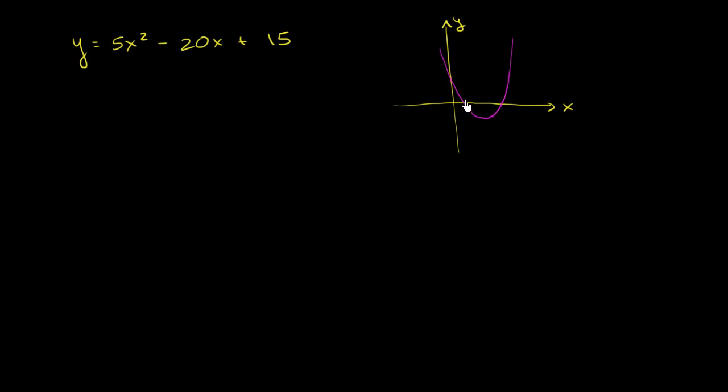I want to first figure out, where does this parabola intersect the x-axis? And as we've already seen, intersecting the x-axis is the same thing as saying, when does y equal 0 for this parabola? Or another way of saying it, when does 5x squared minus 20x plus 15 equal 0?